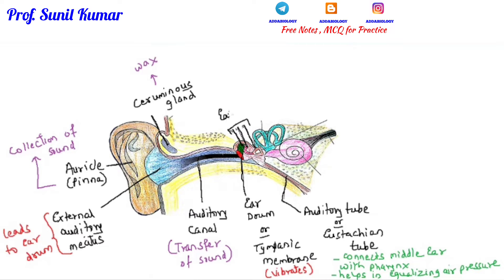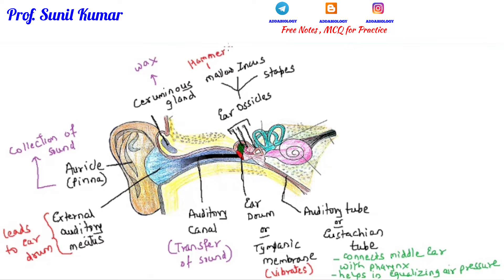The three ear ossicles we need to study are the malleus, incus, and stapes. The malleus is also known as the hammer, the incus is also known as the anvil, and the stapes is also known as the stirrup. The stapes is the smallest bone in the human body — this is very important.